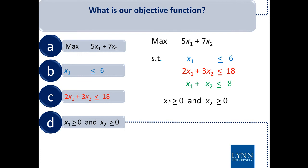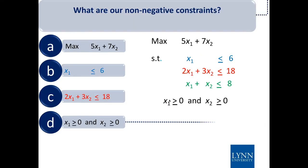The objective function is the maximization expression — this is what we want to do, maximize our profit subject to these constraints. The non-negative constraints are x1 and x2 greater than or equal to zero, meaning we can't have negative numbers.